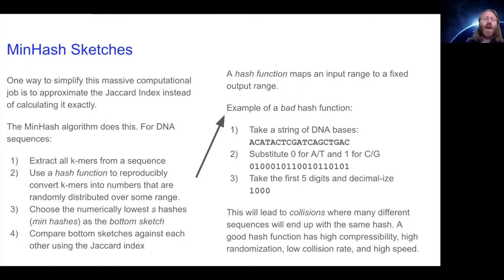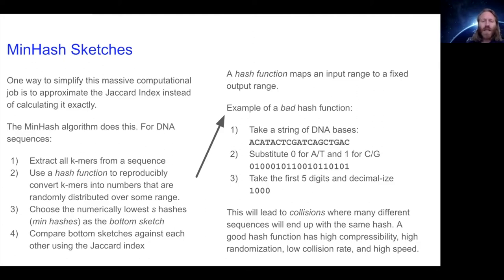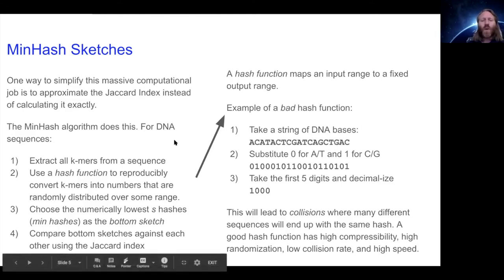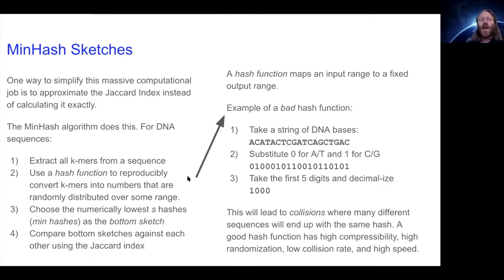One way to simplify this massive computational job is to approximate the Jaccard index instead of calculating it exactly, and that's what the MinHash algorithm does. For DNA sequence, the procedure is: first, extract all k-mers from a sequence of interest; then use a hash function to reproducibly convert those k-mers into numbers randomly distributed over some output range; then choose the numerically lowest hashes — let's say the number is s — which are also known as the MinHashes, giving the algorithm its name. We call that the bottom sketch, and compare bottom sketches against each other using the Jaccard index. The key point is that s is much much lower than the total number of signatures, maybe 1,000 or so.